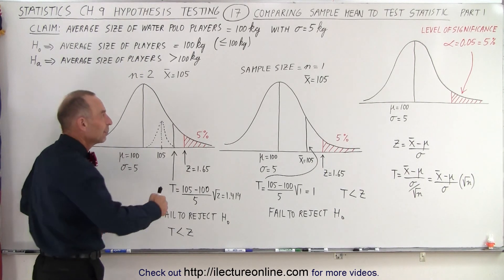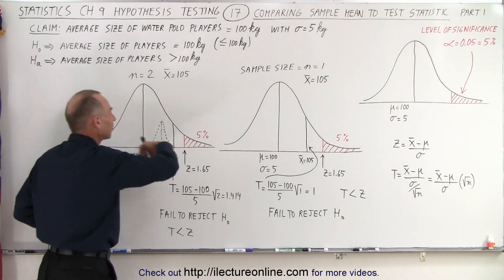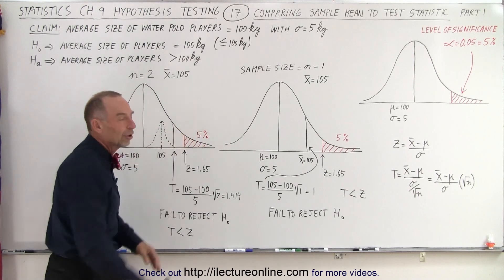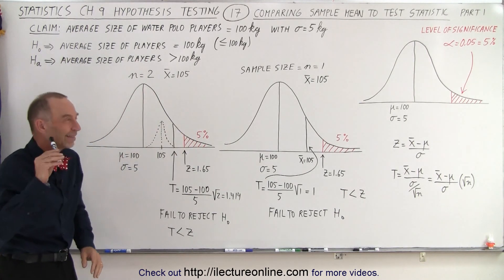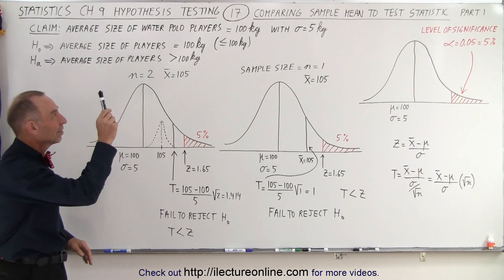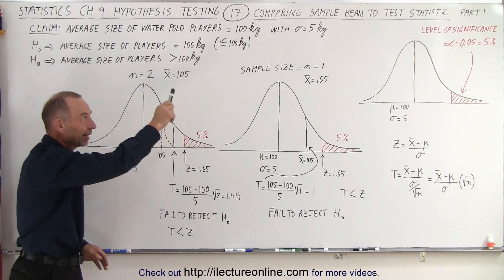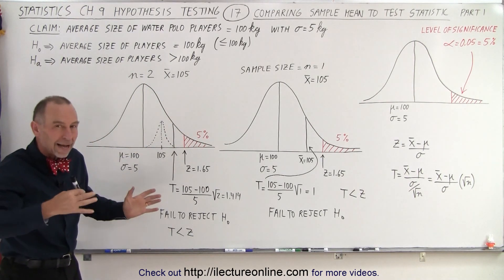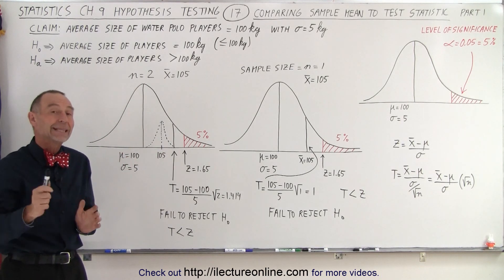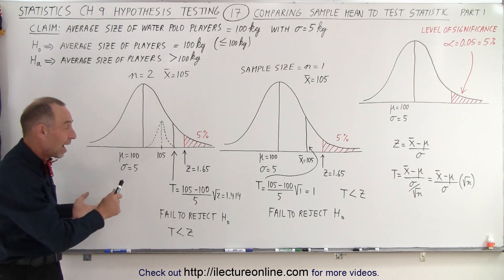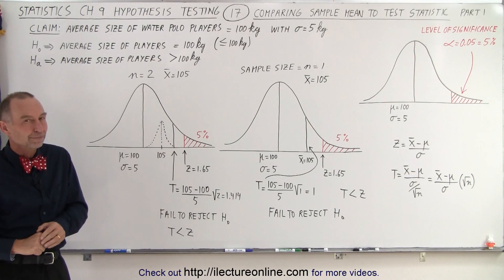We don't have enough confidence by the sample size of 1 or sample size of 2 to reject that null hypothesis. And that's the significance between the difference of the sample mean and the test statistic by the size of the sample. And that is how we know how to look at these numbers and how to interpret them.